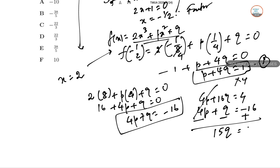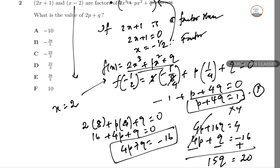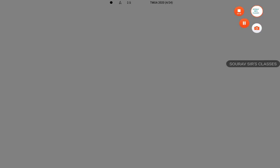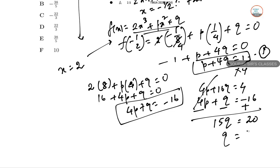To solve: multiply the first equation by 4 to get 4P plus 16Q equal to 4. Subtract the second equation (4P plus Q equal to minus 16) from this. The 4P cancels, leaving 15Q equal to 20, so Q equals 20/15 which is 4/3. Substituting Q = 4/3 back into P plus 4Q = 1: P plus 16/3 = 1, so P = 1 minus 16/3.